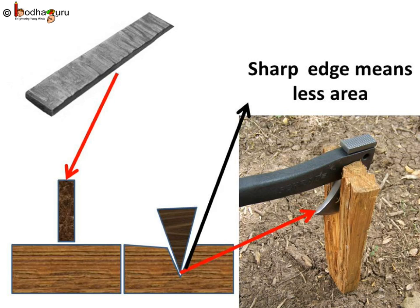As we know, an axe is a wedge. The force used may be the same in both cases, but when using an axe, you are applying more pressure, as the sharp tip of the axe has very less area compared to the blunt piece of iron. So because of this high pressure, the axe enters the plank. The area of the axe used for cutting is much smaller than that of the blunt iron bar, so the same force produces a pressure sufficient to push the pointed end of the axe into the wooden plank.